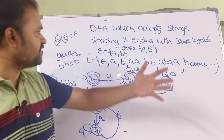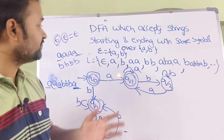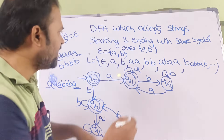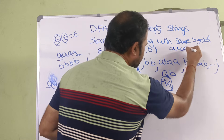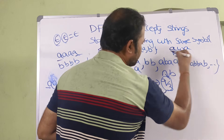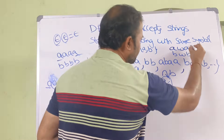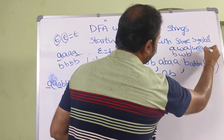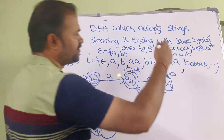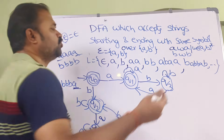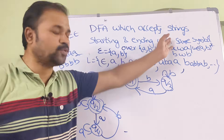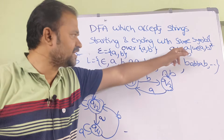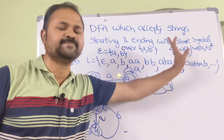So this is the DFA that accepts the set of strings which start and end with the same symbol. The language has two parts: AWA and BWB, where W belongs to {A, B}*. It accepts both languages — strings starting and ending with A, and strings starting and ending with B.